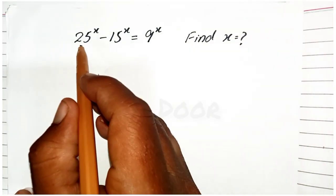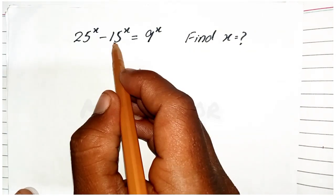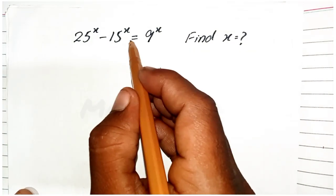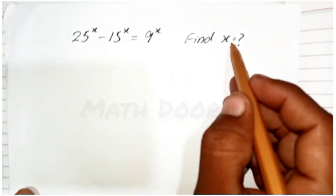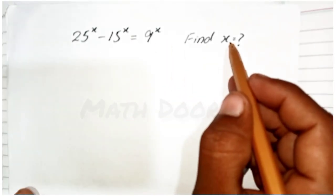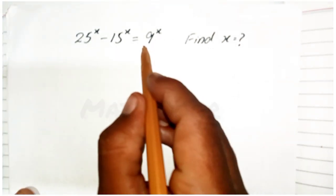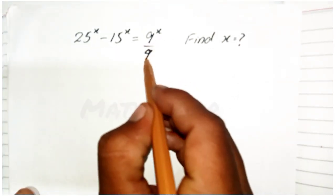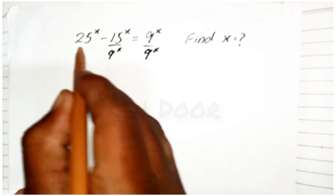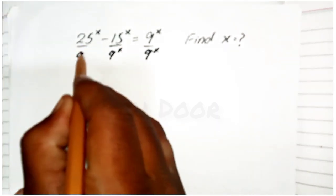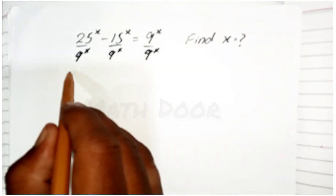Hello math lovers. Today our topic is 25^x minus 15^x is equal to 9^x. Find the value of x. First of all, divide both sides by 9^x.